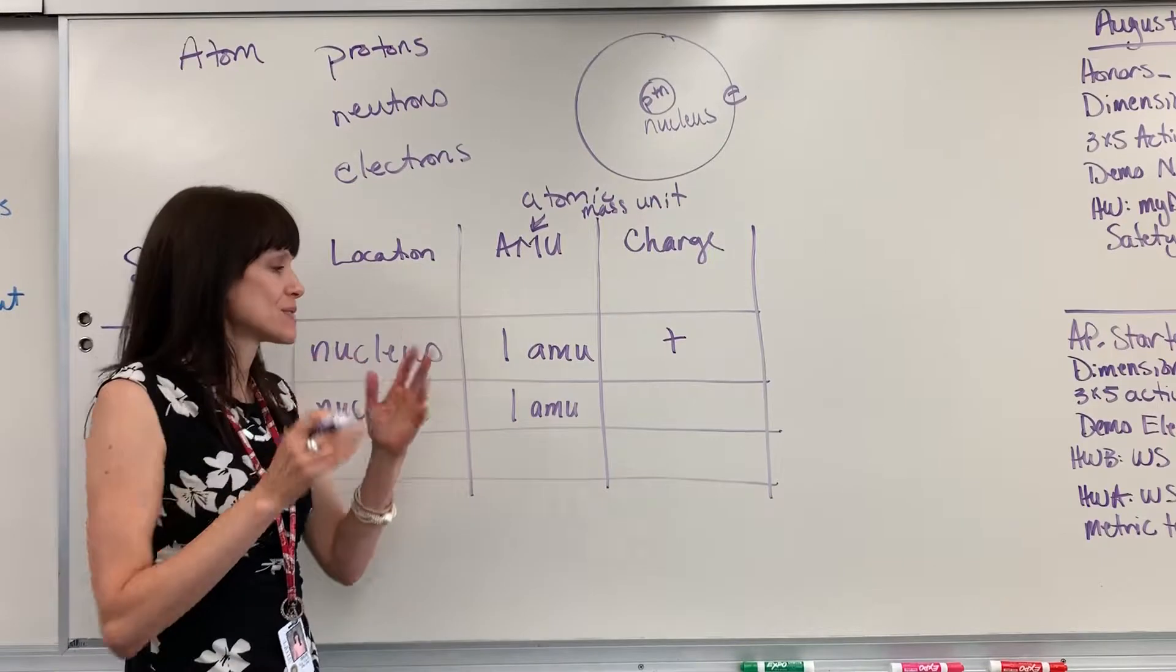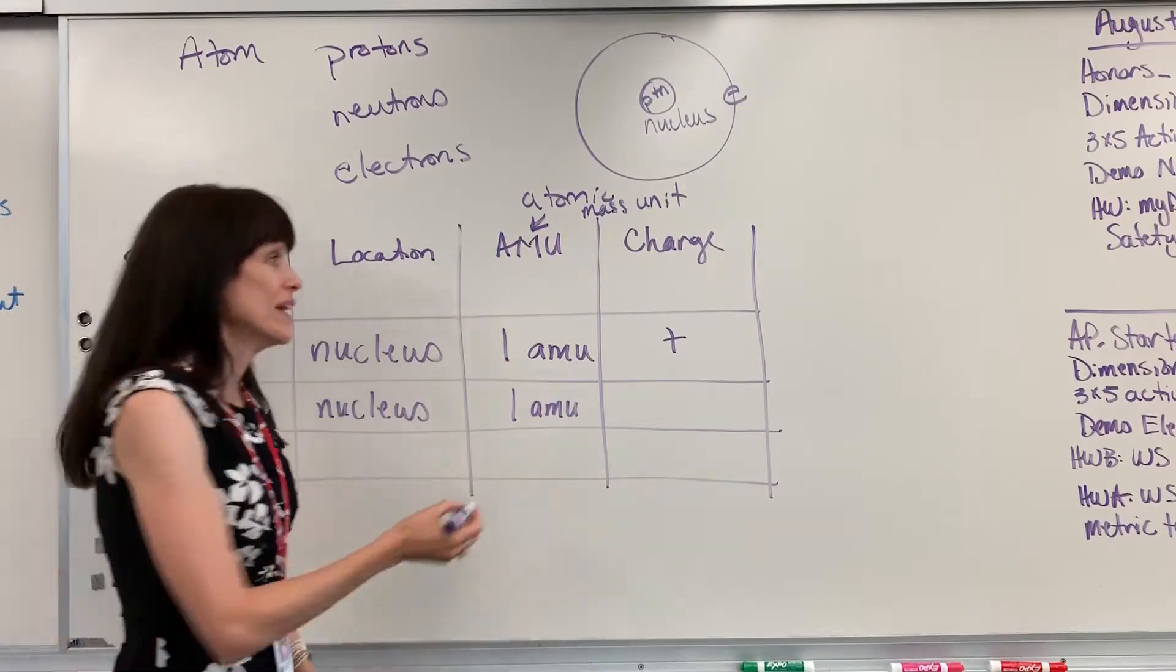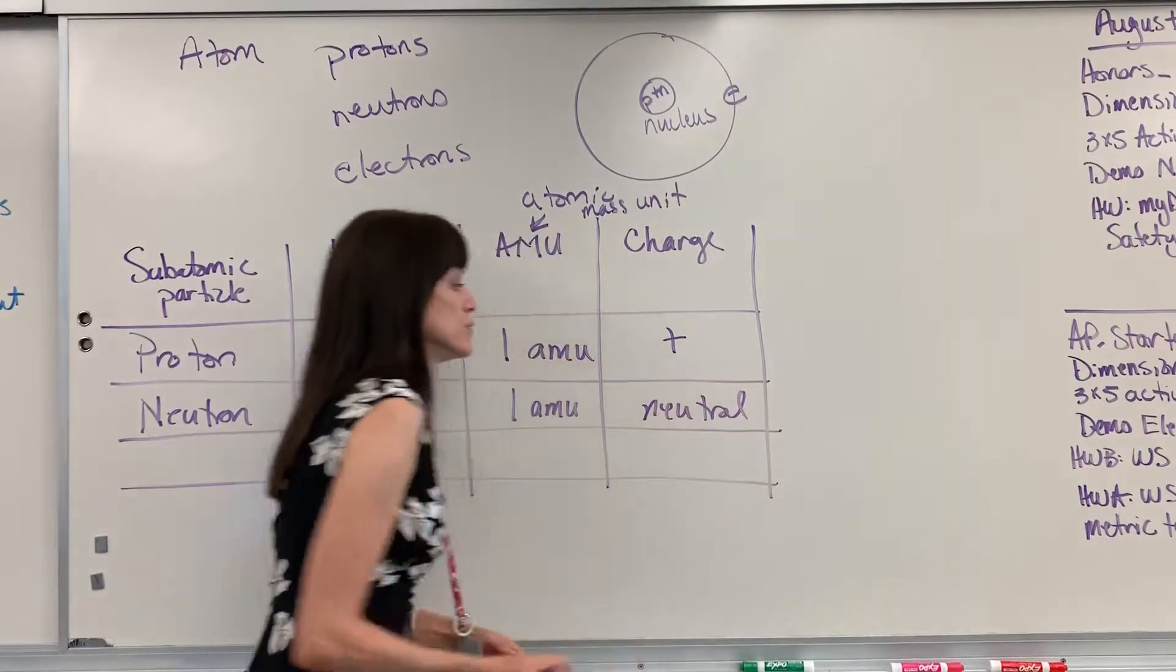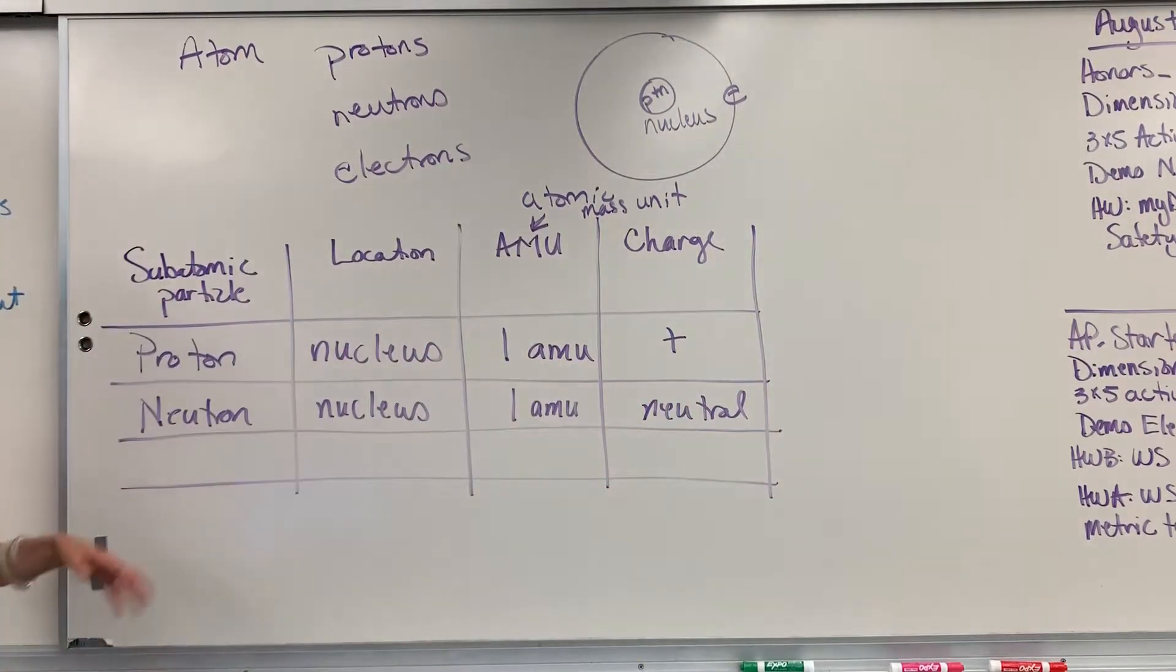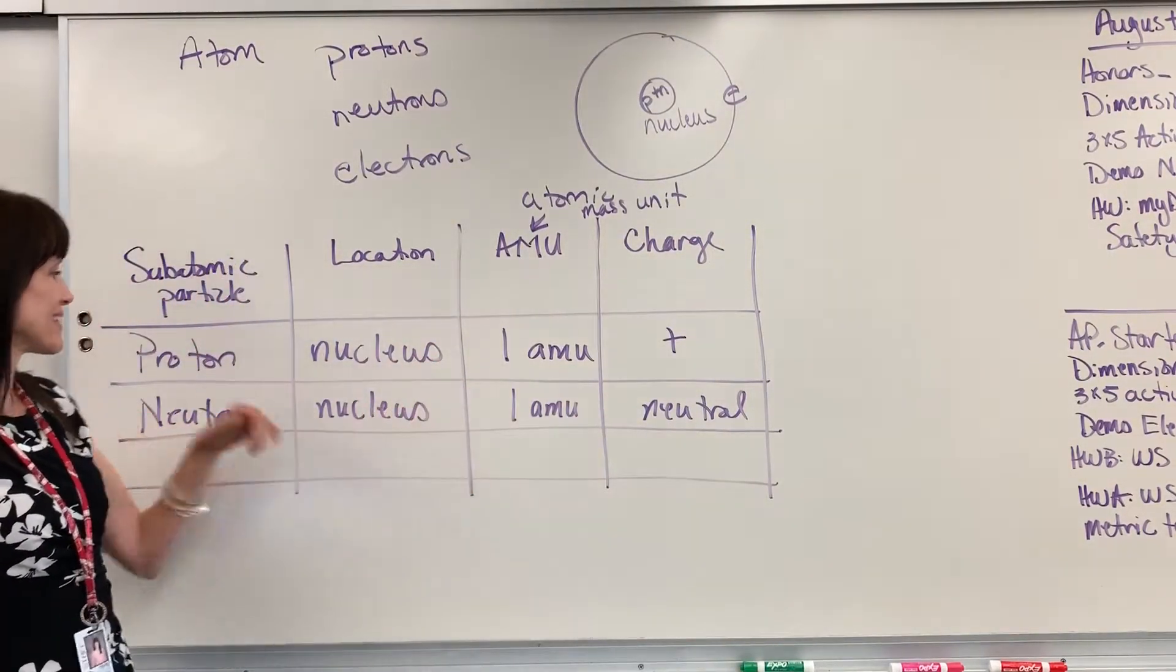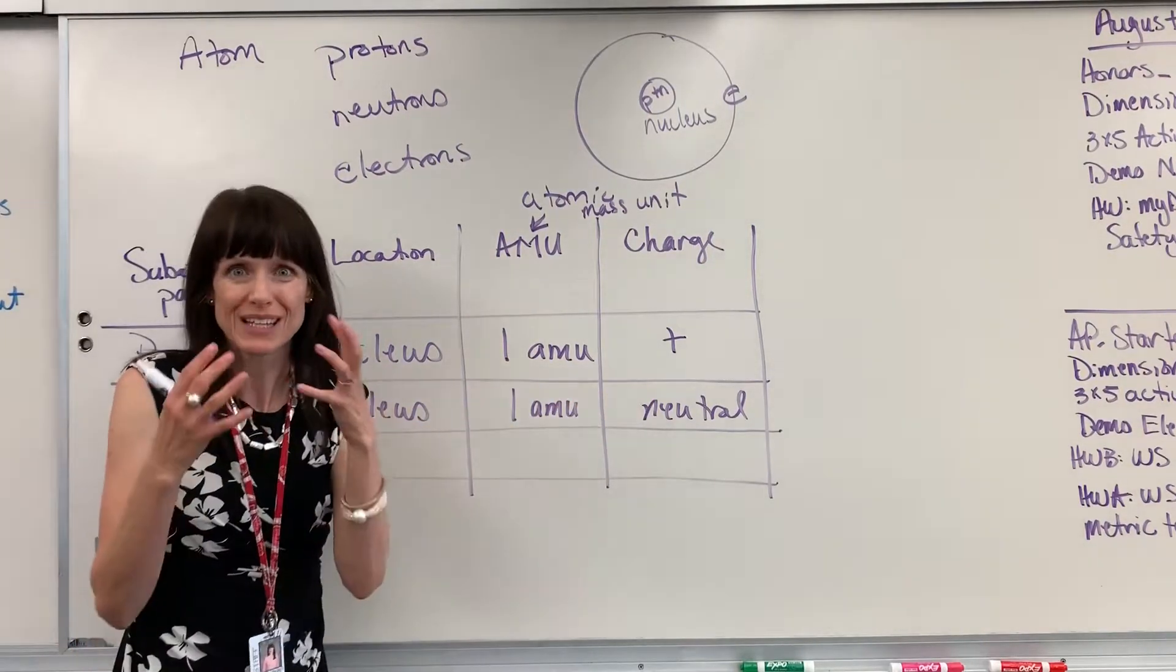But just by a small amount. So for all intents and purposes, we say that it's one amu, and it is neutral. The neutron has no charge. Wasn't discovered until the 1930s. Took us much longer to find it than the proton and the electron because in part it was neutral—almost like it was invisible to us.